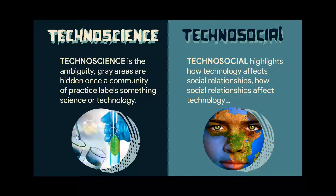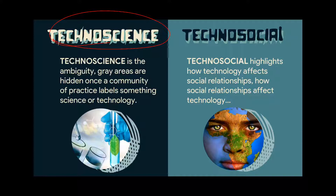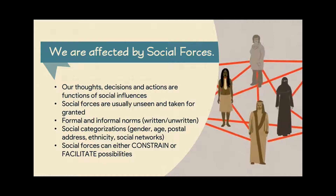Before we move on, let's discuss the term 'technoscience.' Technoscience is a term coined by the first STS scholars and basically refers to the ambiguity and gray areas hidden once a community of practice labels something science and technology. The same STS scholars also coined the term 'technosocial,' which highlights how technology affects social relationships and how social relationships affect technology — something we'll discuss in latter parts of this course.